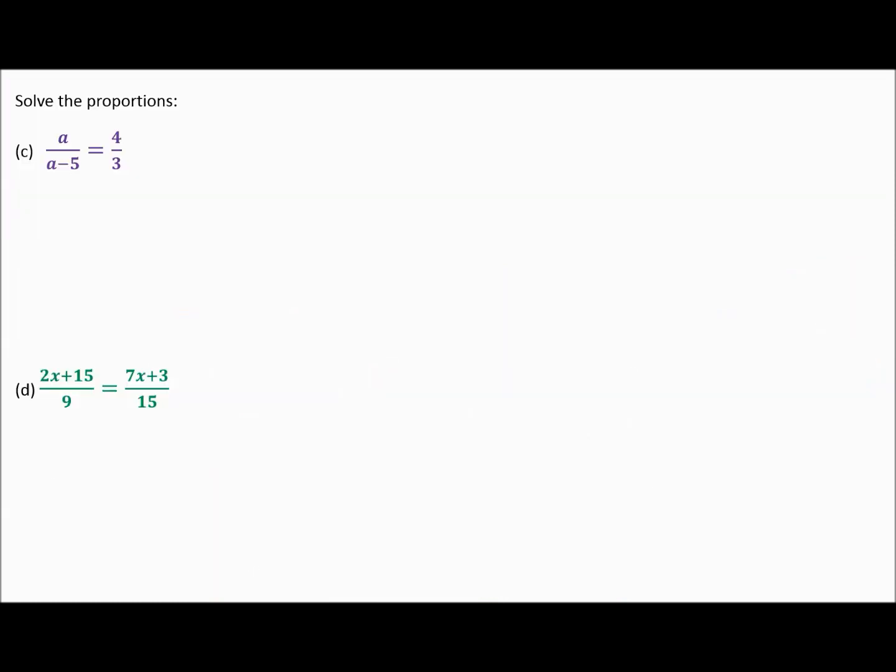So on this page, I have a couple of proportions to solve. No word problem here. Just cross multiply. So a times 3, I'm going to write it as 3a. And on the other side, 4 times a minus 5. Now watch this. If I write 4a minus 5, I'm going to tell you that's wrong. I'm multiplying 4 times the entire difference of a minus 5. So parentheses are your friends here.